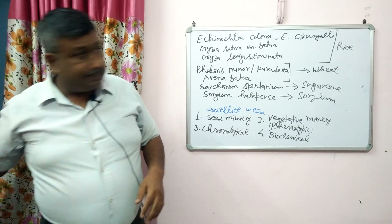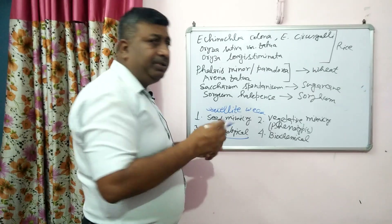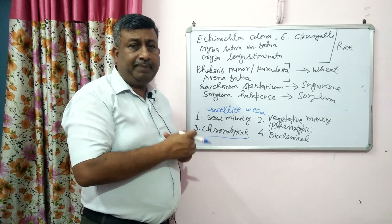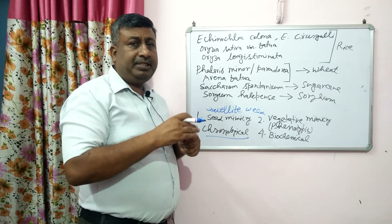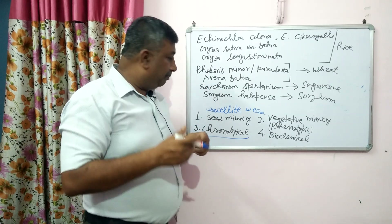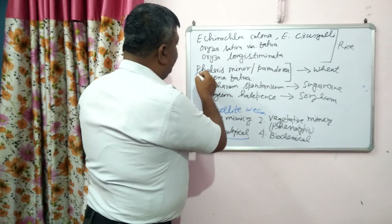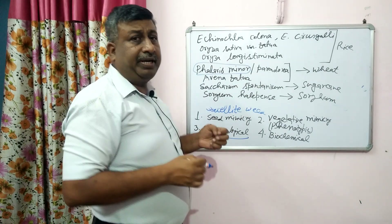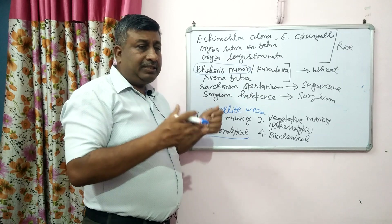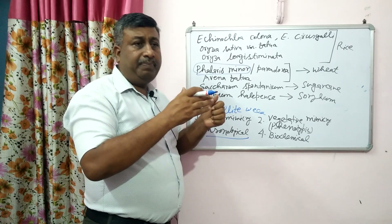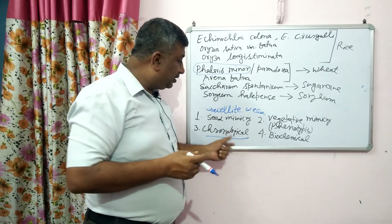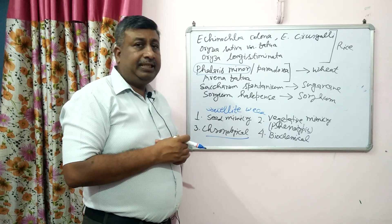To control vegetative mimicry weeds, hand weeding is very difficult, so we use herbicides because herbicides have selectivity to control weeds. In the field it is difficult at early stage to know whether it is Phalaris minor or wheat, Echinochloa colona or rice, or Saccharum spontaneum or sugarcane. In case of chronological mimicry, these weeds mature with the crop at the same harvest time and same height, so they are harvested together with the crop.